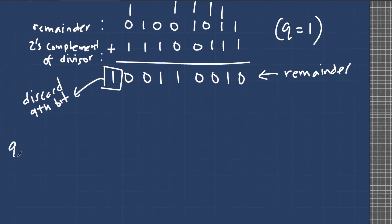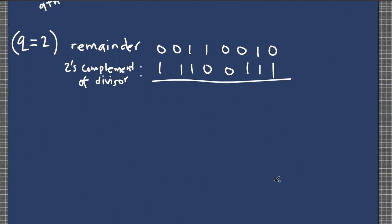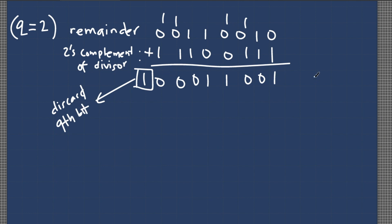We continue with the new remainder 00110010 and add the two's complement 11100111. After adding and discarding the 9th bit, the remainder is still positive. We increment Q to 3. We then add the new remainder 00011001 and the two's complement 11100111. After discarding the 9th bit, we increment Q to 4. This time, the remainder is 0.